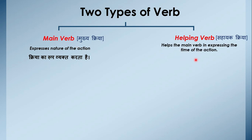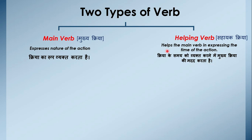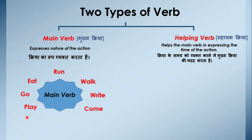Helping verb kya hootie hai? Helping verb woh verb hootie hai jho main verb ki help kerti hai aur bataati hai ki jho kaam ho raha hai uska timing kya hai — woh kis samye ho raha hai. Kya woh present me ho raha hai, yaa phir bhavishya me, yaa phir bhut kaal mein? So present, past aur future ke baare mei bataati hai. Kriya ke samye ko vyakt karne mei mukhya kriya ki madd kertai hai. Main verb jho hai — run, walk, eat, go, write, come, play, drink — yhe sab main verb hai. Yhe bataati hai ki karriya ka roop kya hai.